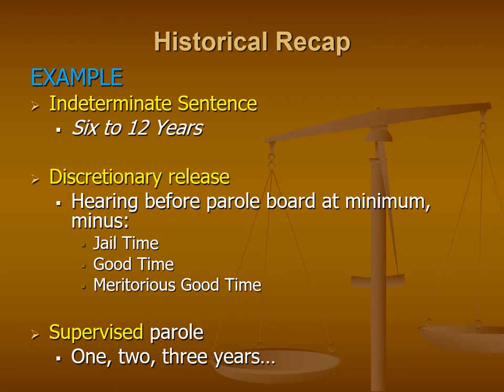How do we get to this notion of discretionary release? Once a person has met the minimum of that indeterminate sentence — so six years — but it's not always just six years. There's a bit more to it: hitting that minimum period of time, in this case six years, but then we can subtract even more time. The offender can potentially get credit for jail time — time they spent in jail prior to their trial and conviction — and that is taken away from the six years.